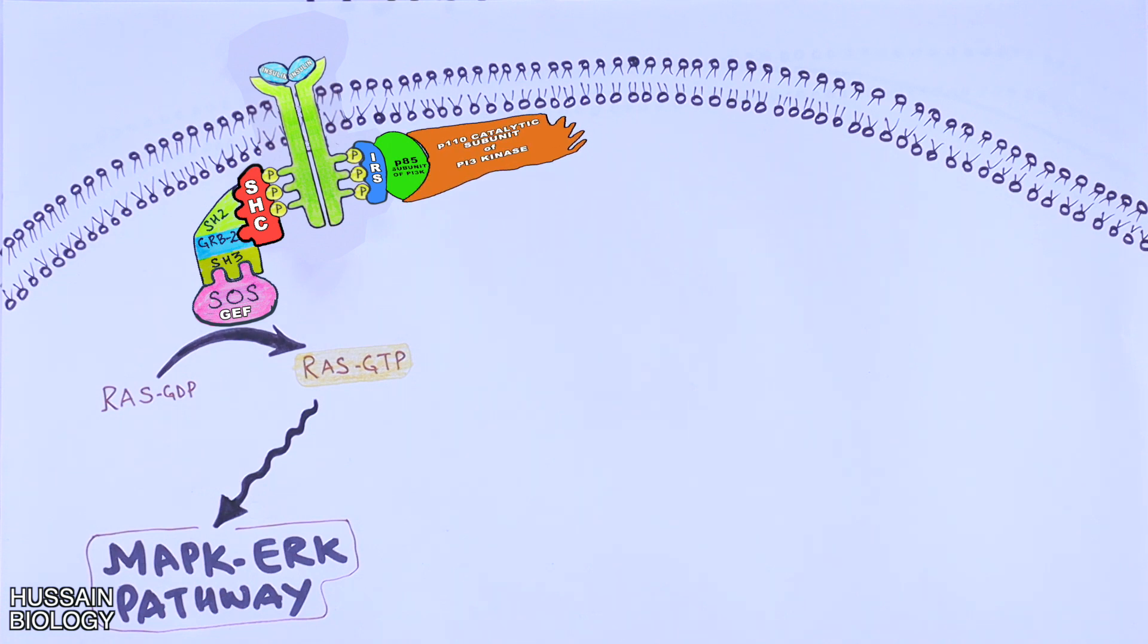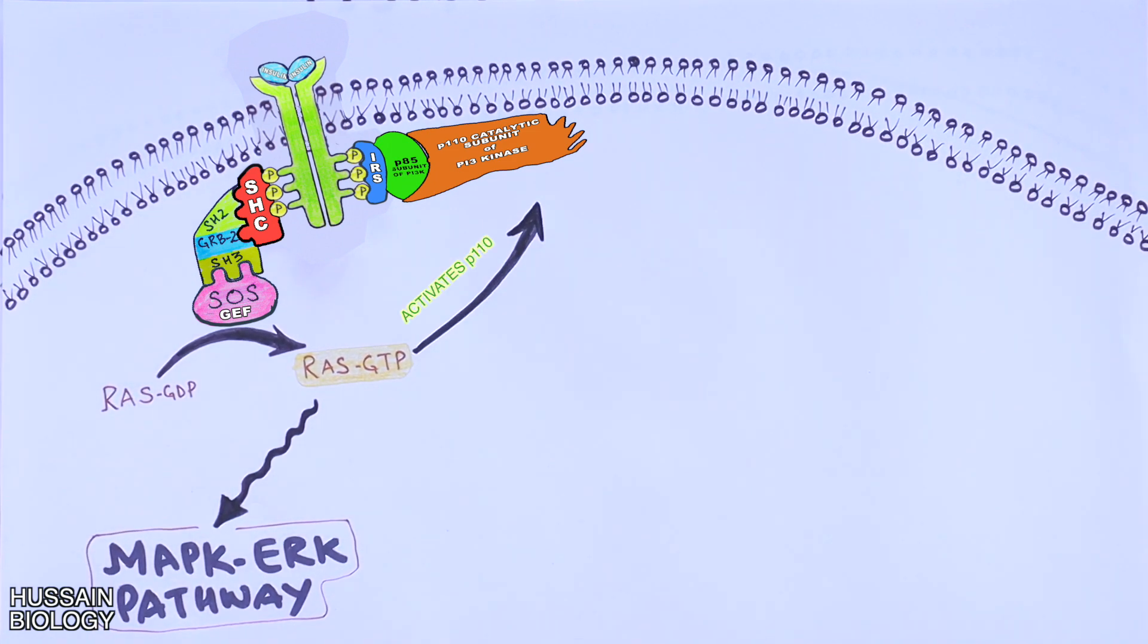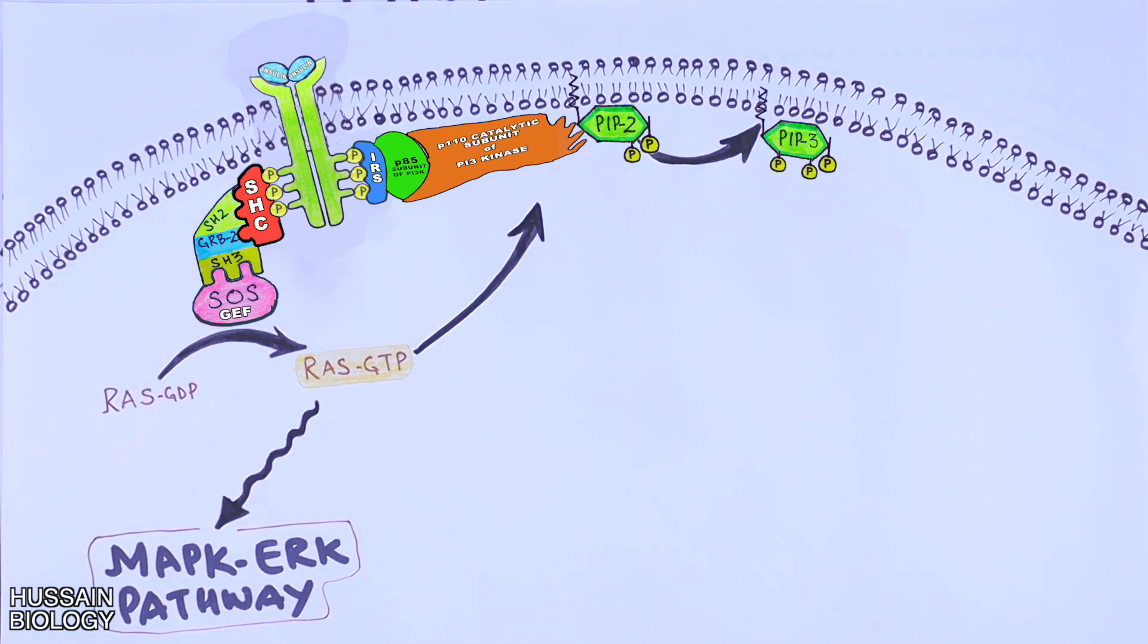But it is still inactivated because p110 needs activation, and it is by the RAS-GTP that activates the p110, that is the catalytic domain of PI3K protein, that enables the PI3K into its active state. Now PI3K is enabled, it will catalyze the conversion reaction. PI3K acts on PIP2 and converts it into PIP3. So here in this reaction we see it adds one phosphate to the PIP2 structure converting it into PIP3.